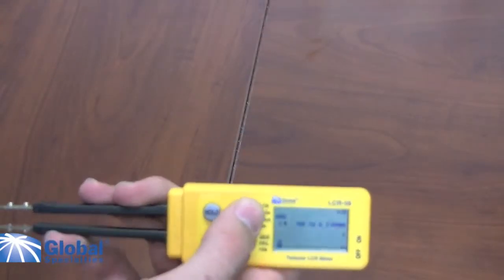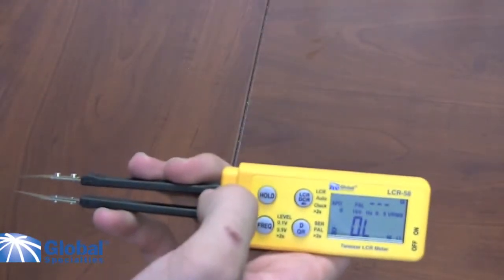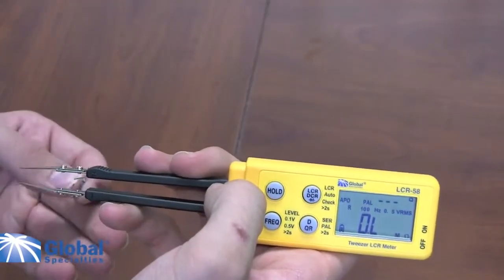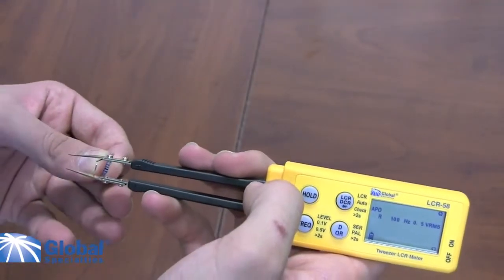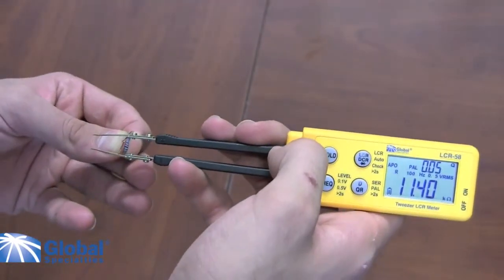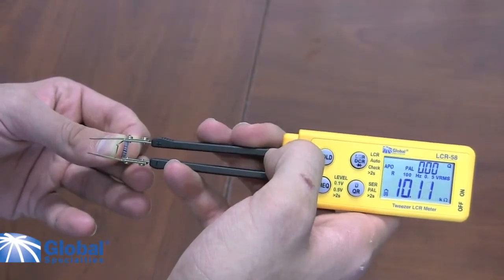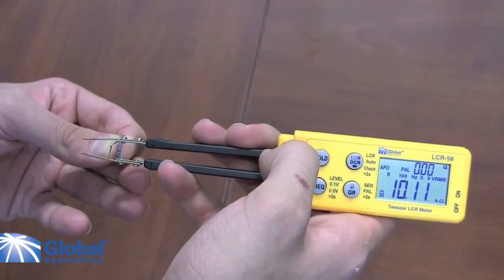Now let's try resistance. Here we have a 10 kOhm resistor with an accuracy of 1%. As you can read on the LCR58, our result of 10.11 kOhms is very close.